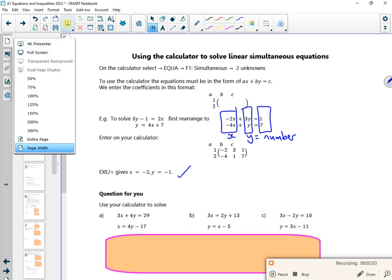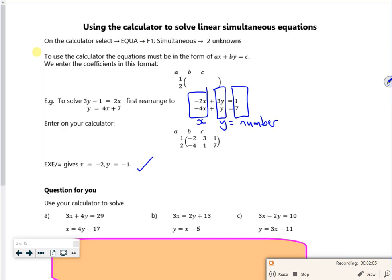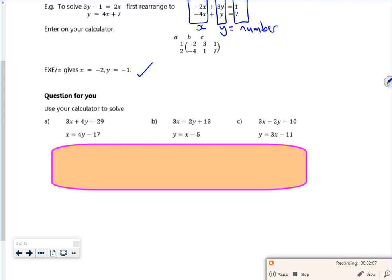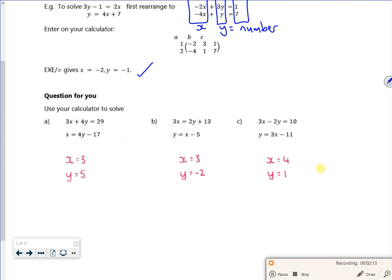So then it says, use your calculator. So you want to have a calculator now. Put them for x's, y's, equals numbers. So we'll have 3x, 4y, equals 29. x minus 4y, equals minus 17.